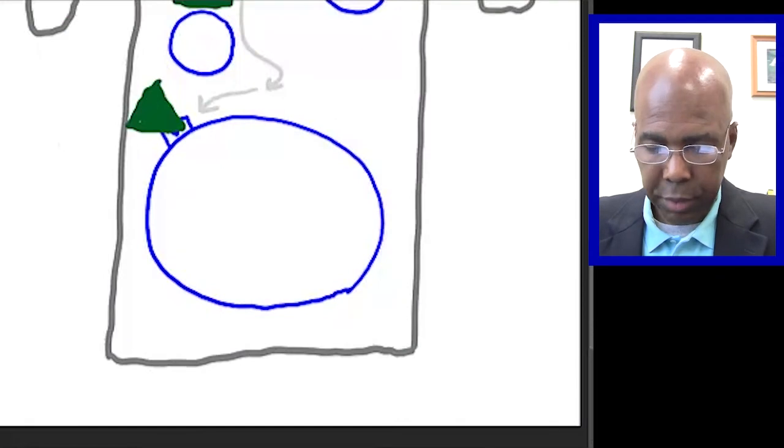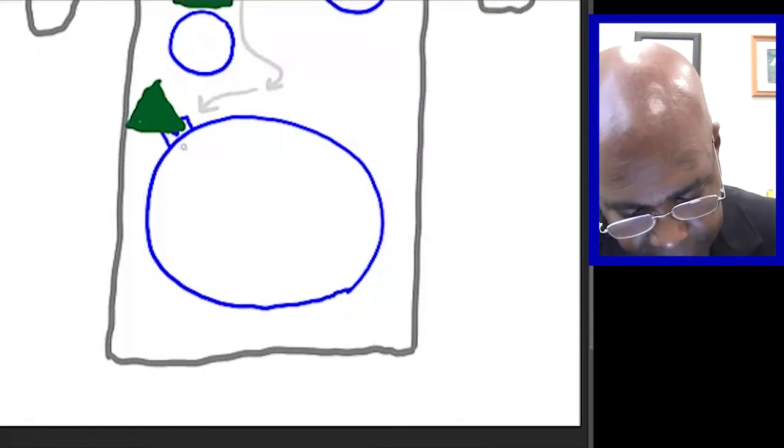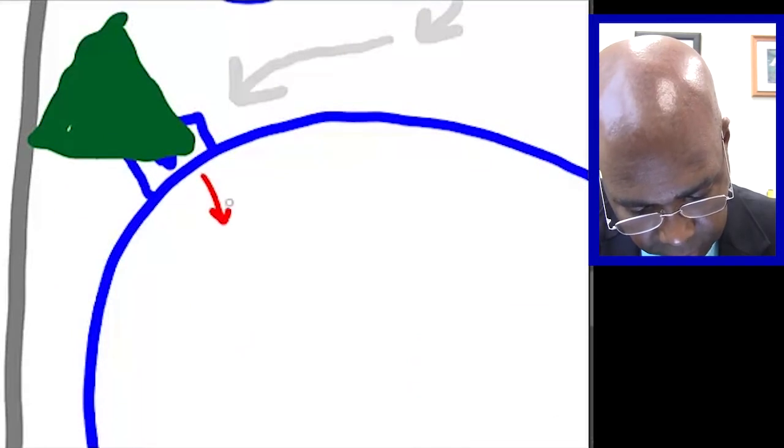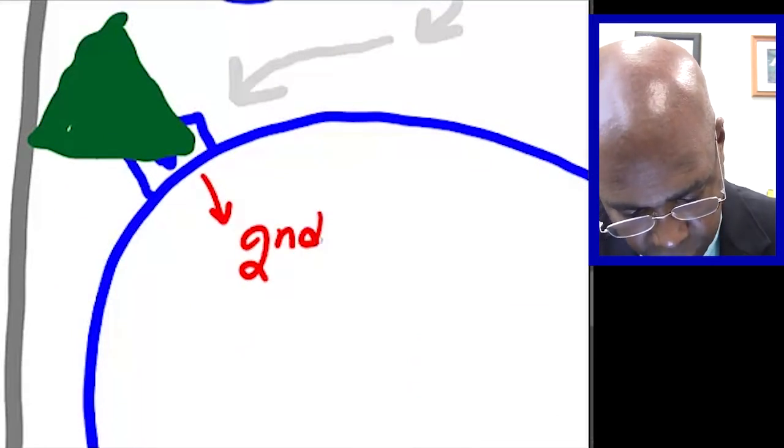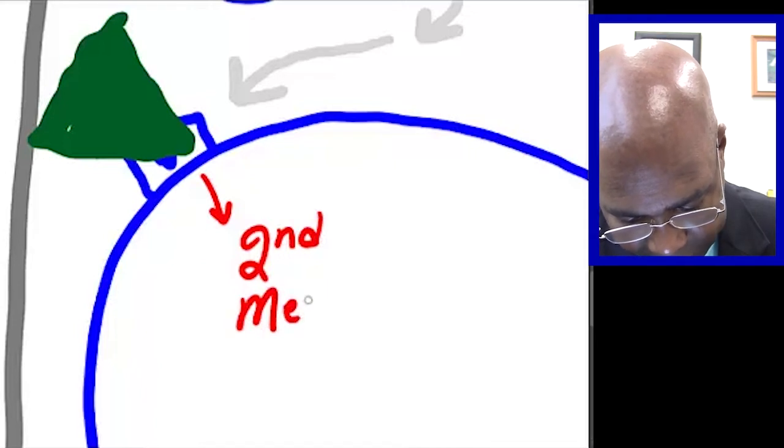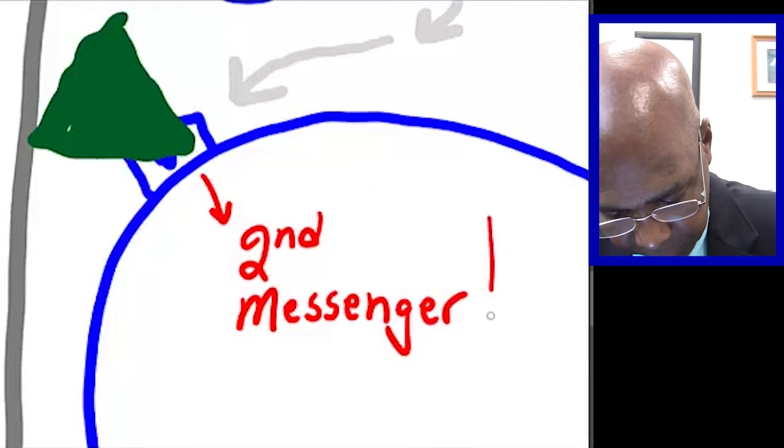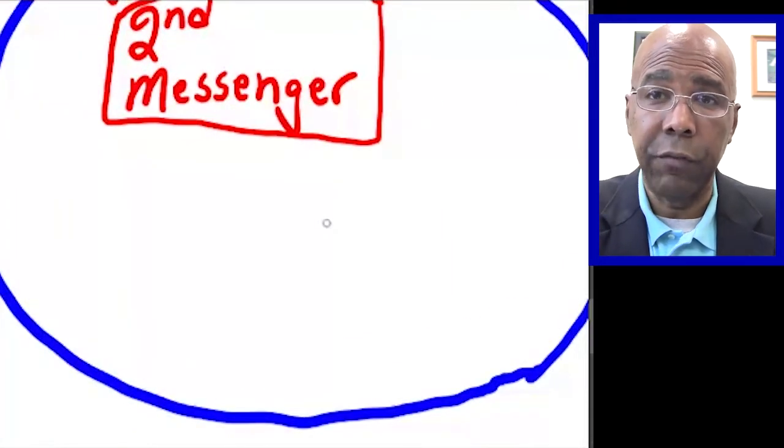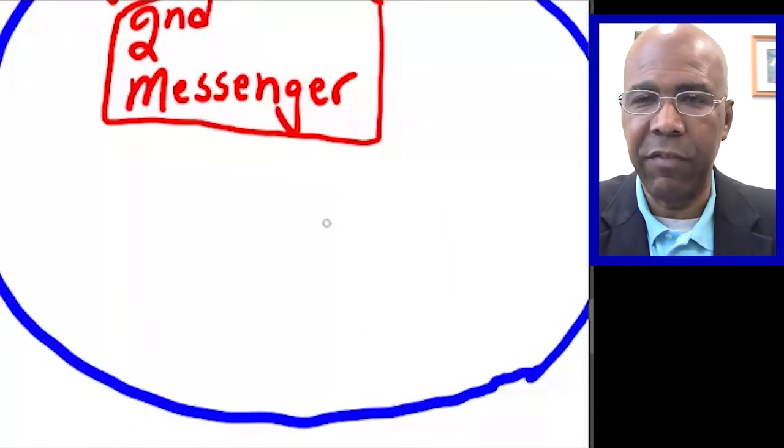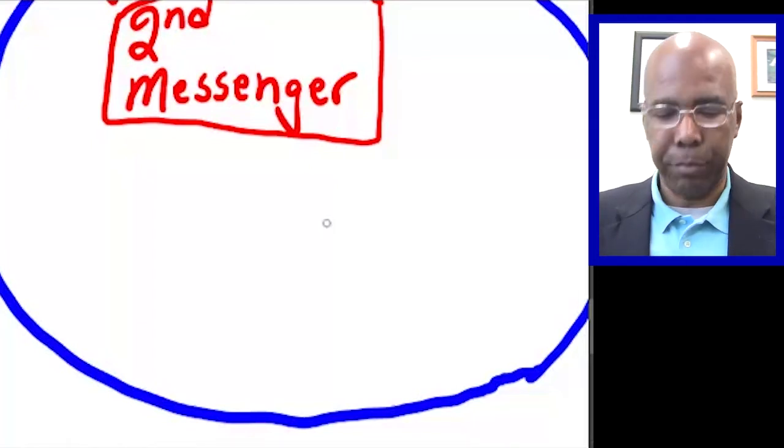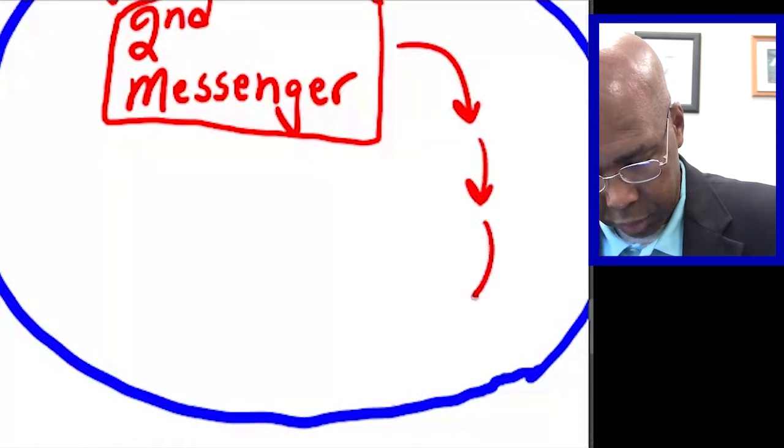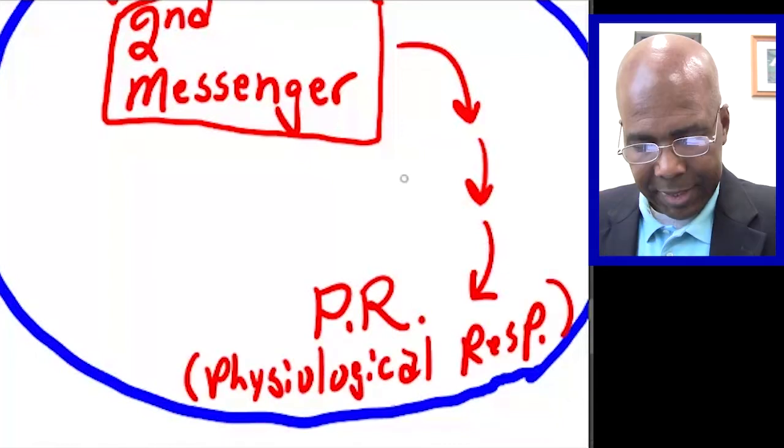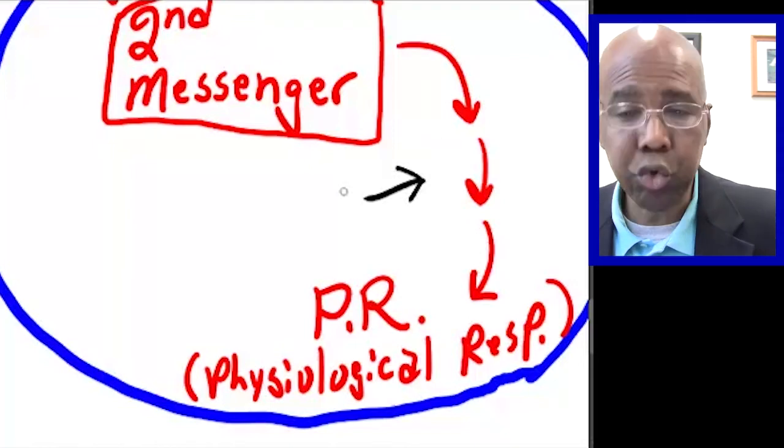Once the hormone binds to the particular cell that fits it, a signal is passed across the cell membrane. And a second molecule is created. We call that molecule a second messenger. When that second messenger molecule is formed, it leads to the initiation of a cascade of events that ultimately results in the physiological response. This cascade of events is known as the signal transduction pathway.